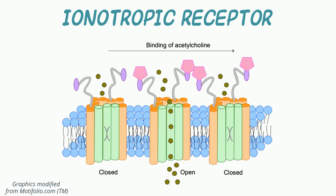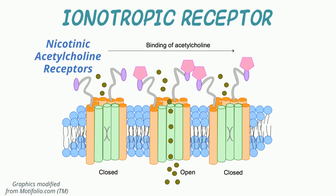Looking more closely at the different types of signal transduction systems, let's start with ionotropic receptors, which are drug ligand-gated transmembrane ion channels. These include the gamma-aminobutyric acid, or GABA, linked chloride channels and the nicotinic acetylcholine receptors linked to sodium channels.